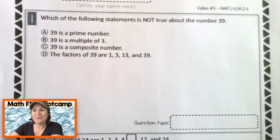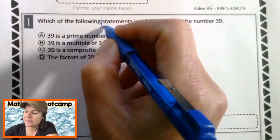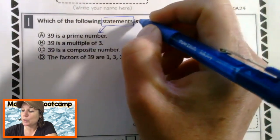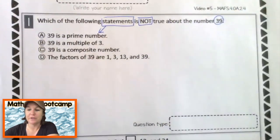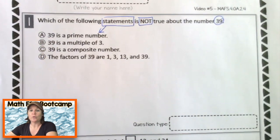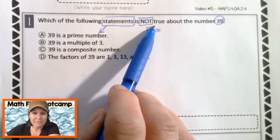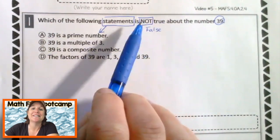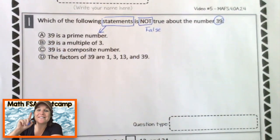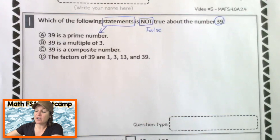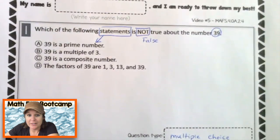Welcome back, everybody. Let's go ahead and take a look. So this one says, which of the following statements is, ooh, these can be kind of tricky, is not true about the number 39. So we're looking for something that is false. Sometimes that word not true can kind of confuse us. So we need to keep on checking back. We've got four answer choices and there should be one that is not true, which means that there should be three that are true. This question type is a multiple choice.